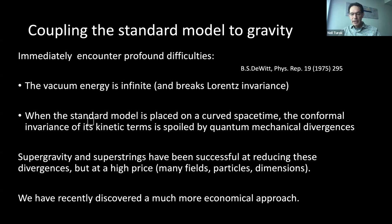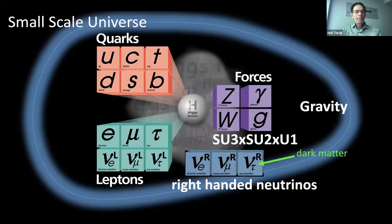It's worse than this, because when you place the standard model of quantum fields on a curved spacetime, like the universe, then the symmetries of the theory are spoiled by these quantum mechanical infinities. And in fact, this leads to great trouble. When you couple it to gravity, you're going to get all kinds of infinities and difficulties in the quantum theory. String theory and supergravity have been successful at somewhat reducing these problems, but at a very high price. You need a huge number of extra fields, particles, and even dimensions of space. And again, this points to a multiverse, which makes the theory completely unpredictable. So we've recently discovered a much more economical approach. It's, again, a little technical. It involves something called dimension zero fields, and I just refer you to our papers.